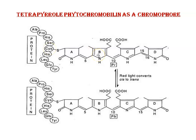The chromophore undergoes cis-trans isomerization at carbon-15 in response to red and far-red light. When this cis-form absorbs red light, that red light converts the cis-form into the trans-form.